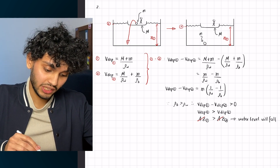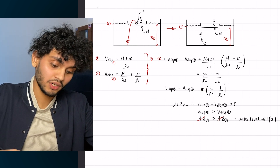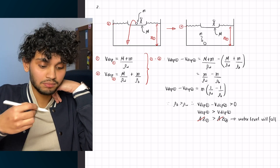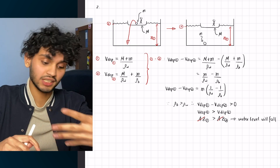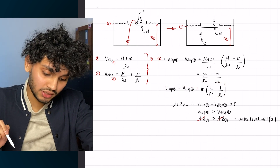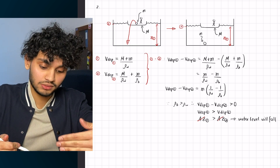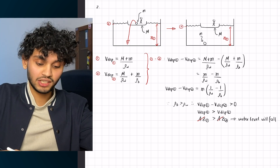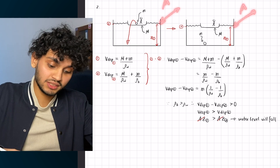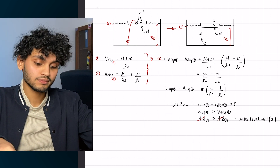If you subtract the two scenarios, you get: volume displaced in scenario one minus volume displaced in scenario two equals little m multiplied by the reciprocal of the density of water minus the density of the ball. Since the ball sinks, the density of the ball is greater than the density of water, meaning the left-hand side is positive — so volume displaced in scenario one is greater than in scenario two. Breaking volume into area times height, with equal areas in both scenarios, z1 is greater than z2, meaning the water level actually falls.